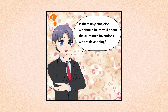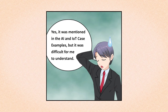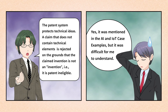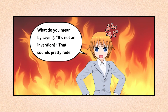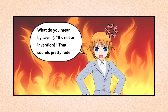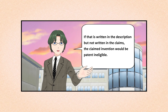Is there anything else we should be careful about with AI-related inventions we're developing? The patent system protects technical ideas. A claim that does not contain technical elements is rejected on the grounds that the claimed invention is not an invention — i.e., it is patent ineligible. It's important to know whether or not the claim involves the creation of technical ideas utilizing the laws of nature. If that is written in the description but not written in the claims, the claimed invention would be patent ineligible.